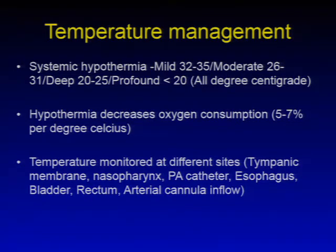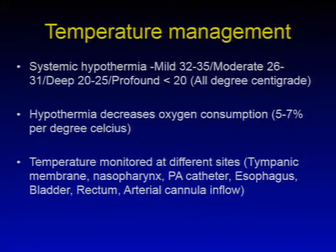Temperature management during bypass is important. Systemic hypothermia is classified as: mild (32–35°C), moderate (26–31°C), deep (20–25°C), and profound (below 20°C). Hypothermia decreases oxygen consumption by 5–7% per degree Celsius. Temperature should be monitored at multiple sites during CPB, including tympanic membrane, nasopharynx, PA catheter, esophagus, bladder, rectum, and arterial cannula inflow.